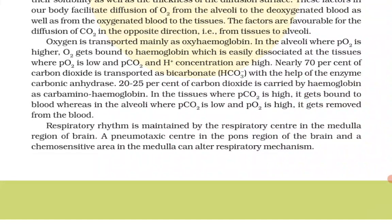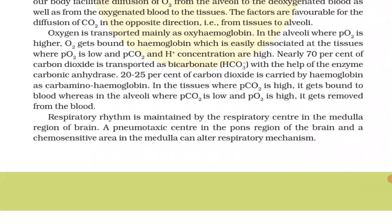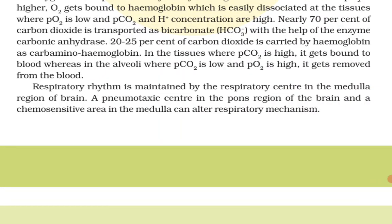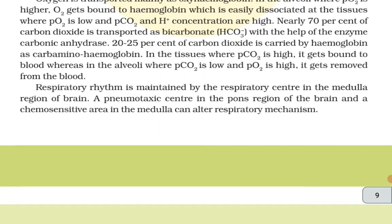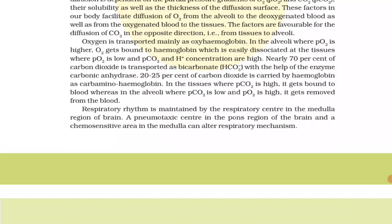Oxygen is transported mainly as oxyhemoglobin. In the alveoli where pO2 is higher, O2 gets bound to hemoglobin, which is easily dissociated at the tissues where pO2 is low and pCO2 and H+ concentration are high. Nearly 70 percent of carbon dioxide is transported as bicarbonates (HCO3⁻) with the help of the enzyme carbonic anhydrase. Twenty to 25 percent of CO2 is carried by hemoglobin as carbaminohemoglobin. Respiratory rhythm is maintained by the respiratory center in the medulla region of the brain, a pneumotaxic center in the pons region, and a chemosensitive area in the medulla. Chapter completed.